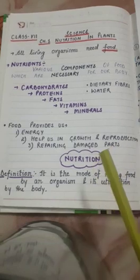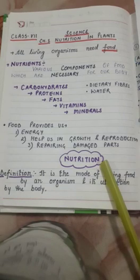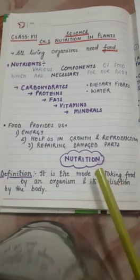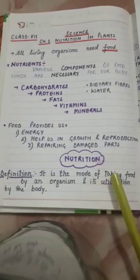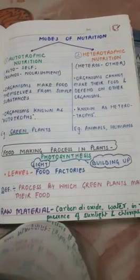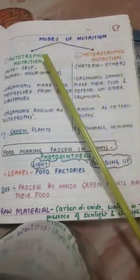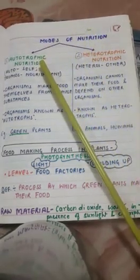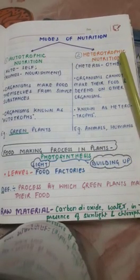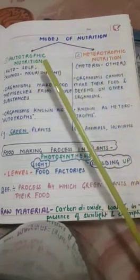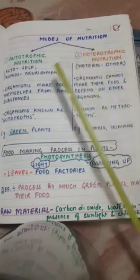Green plants prepare their own food, whereas humans and animals get their food from plants or from other animals. So there are two different modes of nutrition: the first one is autotrophic nutrition and the second one is heterotrophic nutrition.